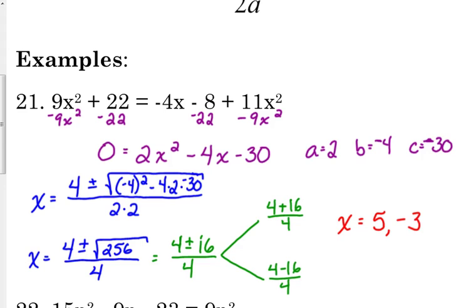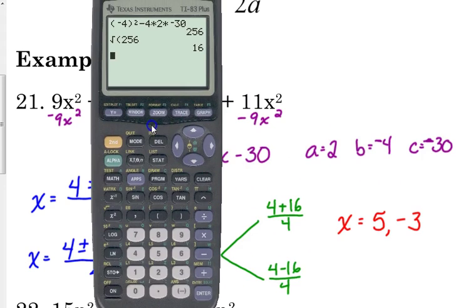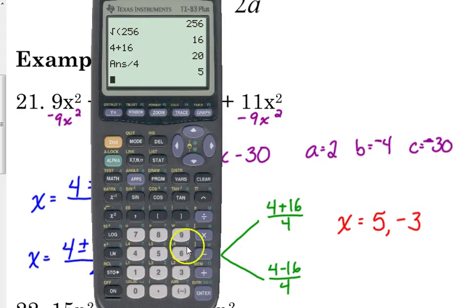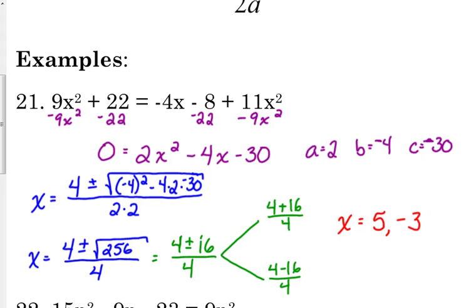You can do that in the calculator, you just need to make sure that if you do, you either do it how I just said it, 4 plus 16 and then divide it by 4, or if you want to type it all in at one time you have to put parentheses around the 4 plus 16 and then divide by 4. If you don't, your calculator follows order of operations.